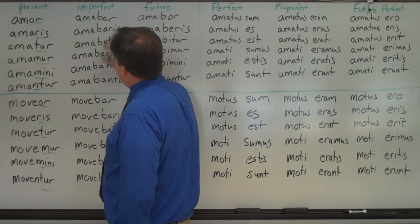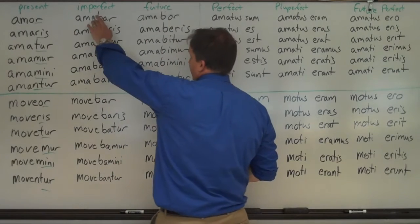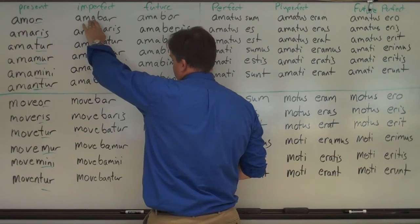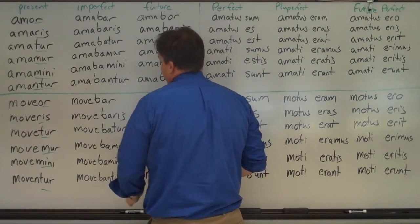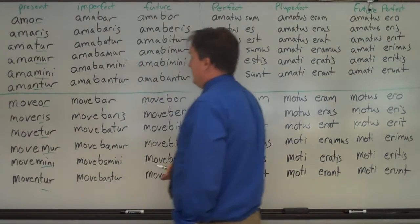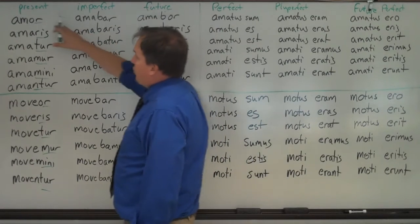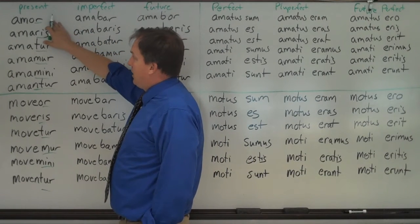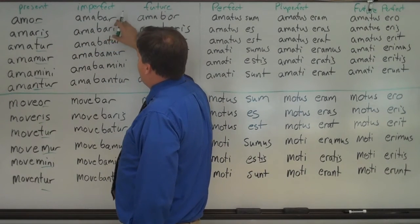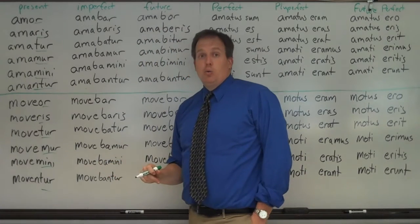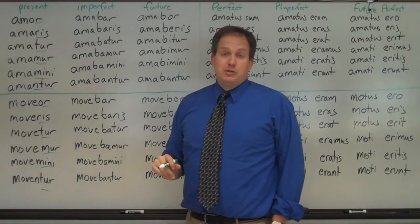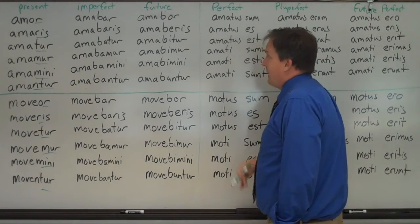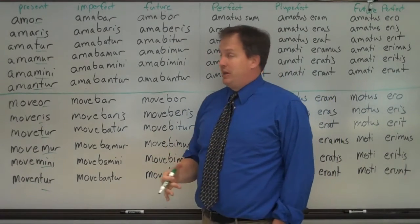Now for the imperfect, you have the BA, just like the active. And you have the vowel here, the A for the first, and an E for the second. And you just combine it with the R, ris, tor, mor, mini, entor. So amor, I am loved, or I am being loved. Amabar would be I was being loved. Make sure to put that down to remind yourself: I was being loved, I used to be loved, I kept on being loved. And it can be a simple past as well, I was loved.